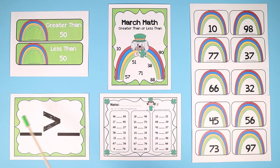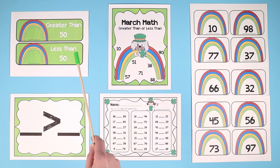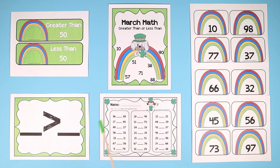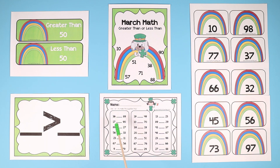Have your students put the flashcards on this placemat, sort them by greater than 50 or less than 50, and then this also comes with a follow-up worksheet where the students can put the inequality symbol — greater than or less than — in the middle to show which number is greater than the other and which one is less than.